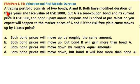The question is: a trading portfolio consists of two bonds, A and B. Both have modified duration of three years and face value of $1,000. Bond A is a zero coupon bond with current price of $900. Bond B pays annual coupons and is priced at par. What do you expect will happen to the market prices of A and B if the risk-free yield curve moves up by one basis point?